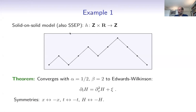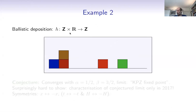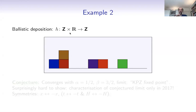There's a second standard example: ballistic deposition. Again H is discrete. I think of H as the height of a pile of bricks — H is the height of the highest brick above any given point. The evolution: choose a location at random, a brick falls down from the sky and piles up. What makes it interesting is that bricks can stick to their neighbors — so a brick falling down can stick to a neighboring brick and not fall all the way down.